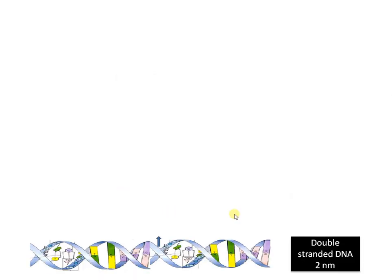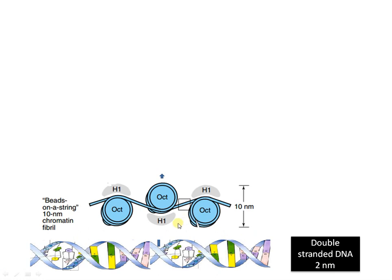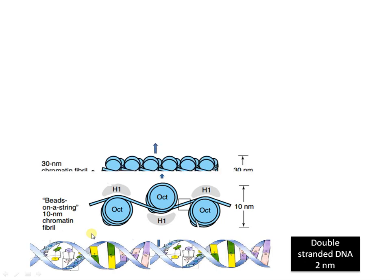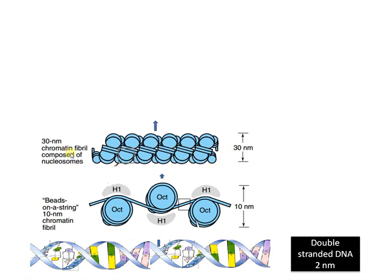Now moving to the next question: what is a chromosome? We know that a double-stranded DNA molecule is approximately two nanometers in size. This double-stranded DNA is further packaged with histone proteins — the proteins involved in DNA packaging. This is the histone octamer, eight histone proteins. The double-stranded DNA is wrapped around these histone proteins, and H1 is the histone involved in further compaction. This forms a 10-nanometer beads-on-a-string model.